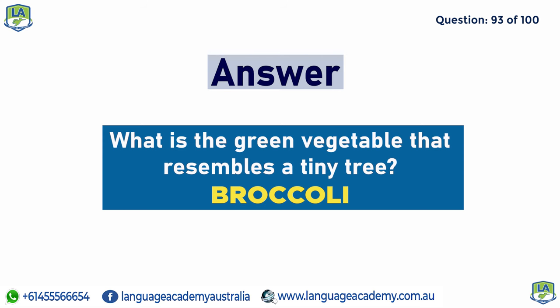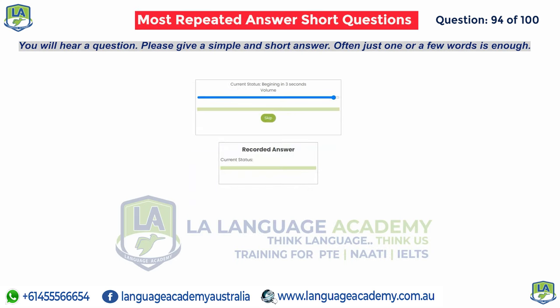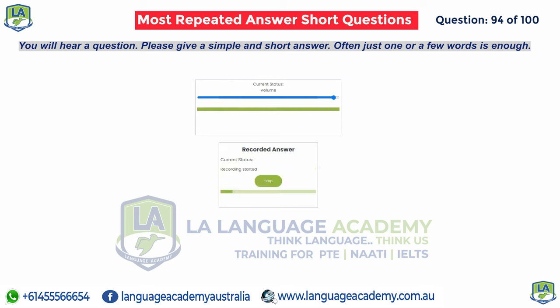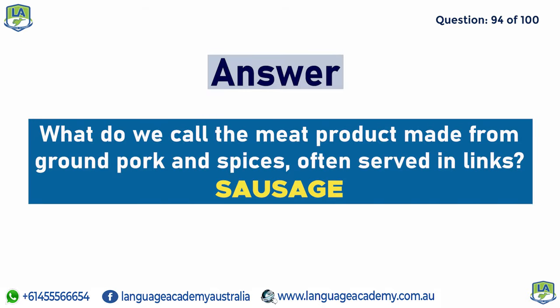What do we call the meat product made from ground pork and spices, often served in links? Sausage.